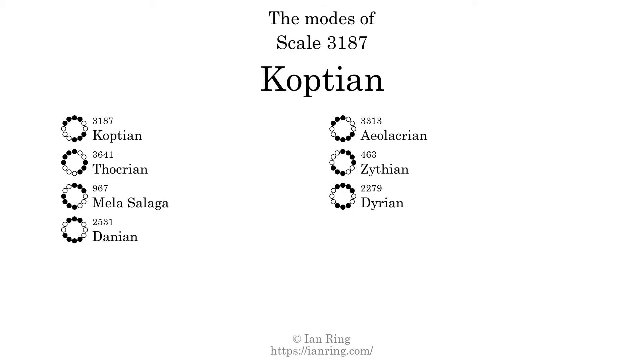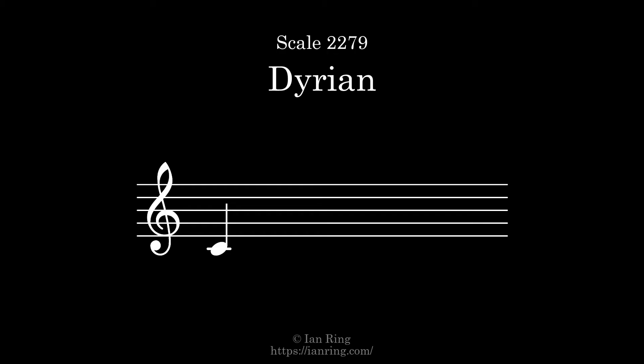The 7th and last mode is scale 2279, also known as Durian. It sounds like this.